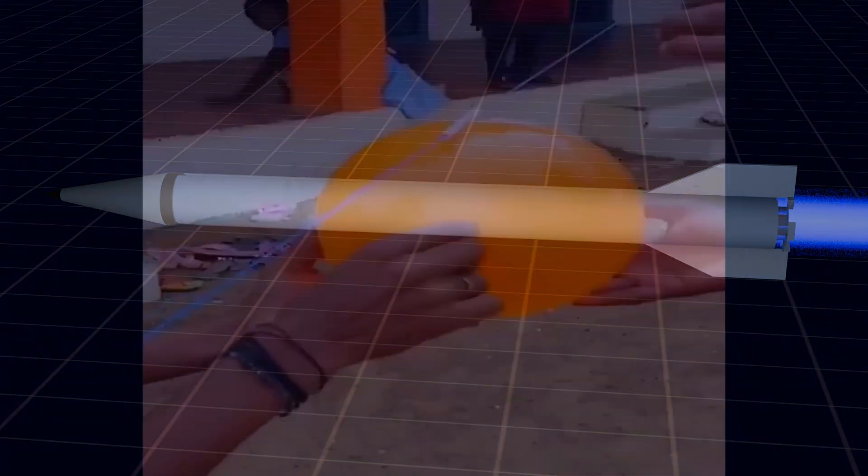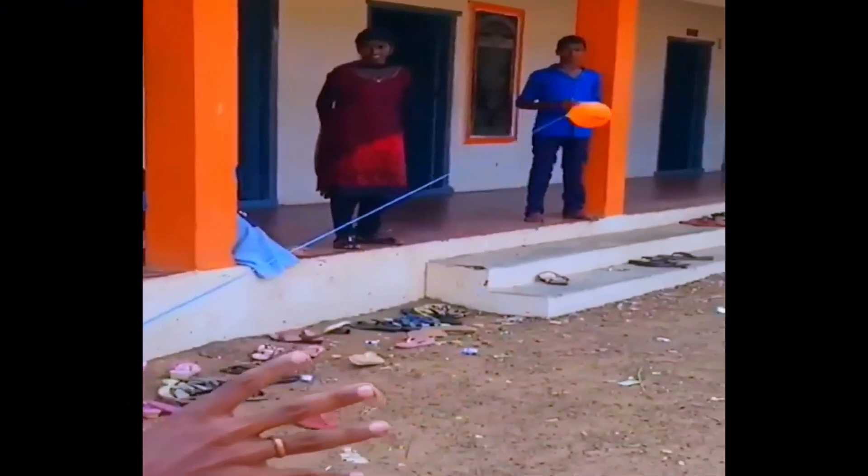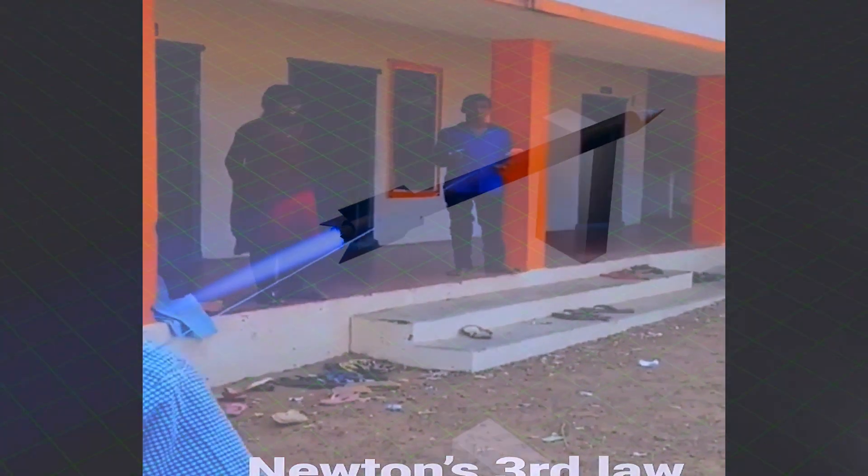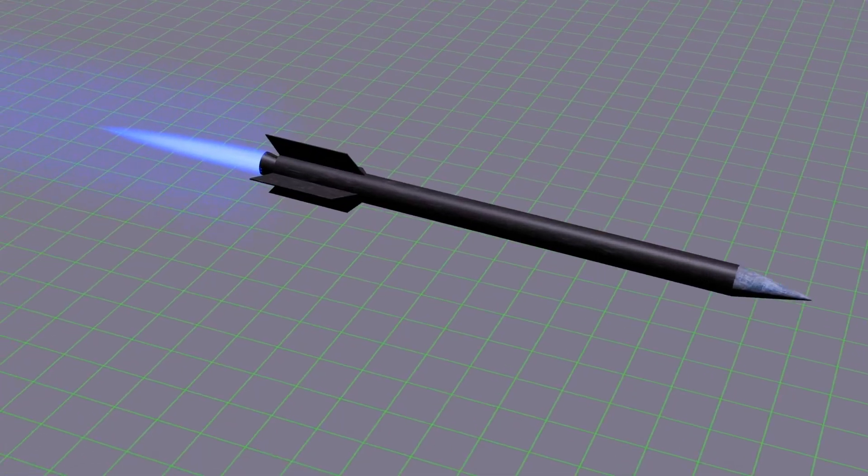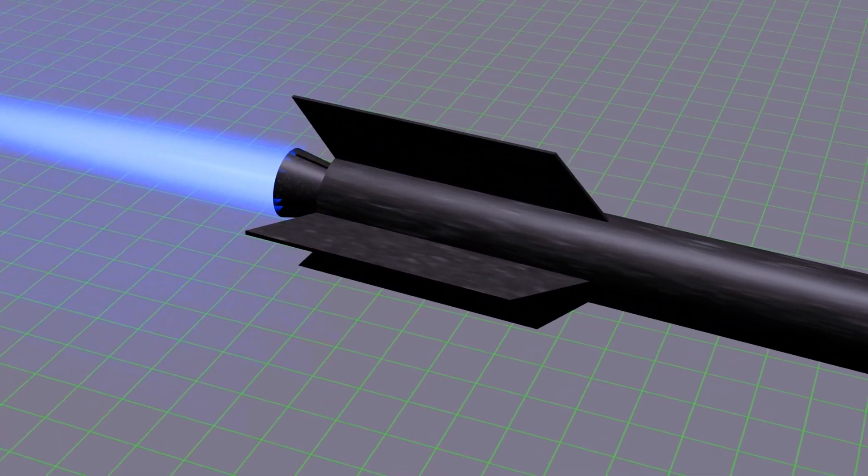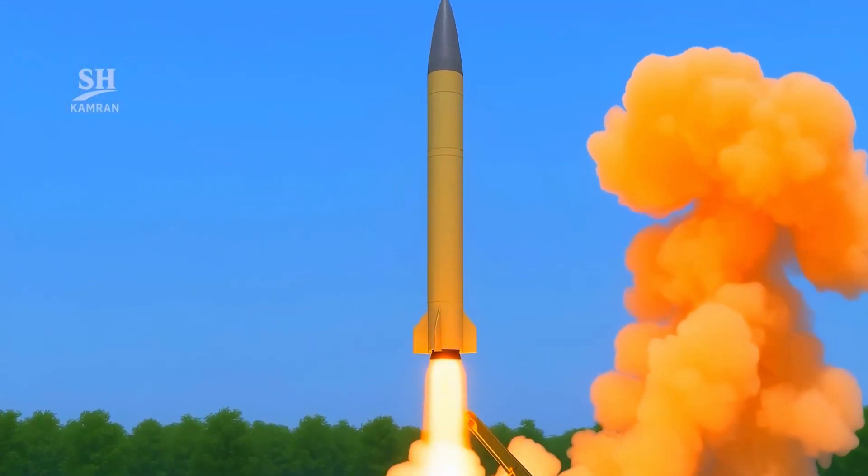We have also seen this in science practical classes. For example, when a balloon is filled with air and released, it flies in the opposite direction because of the reaction force. A rocket or missile works in the exact same way. From the engine or nozzle of the rocket, the burning fuel creates high-speed gas.